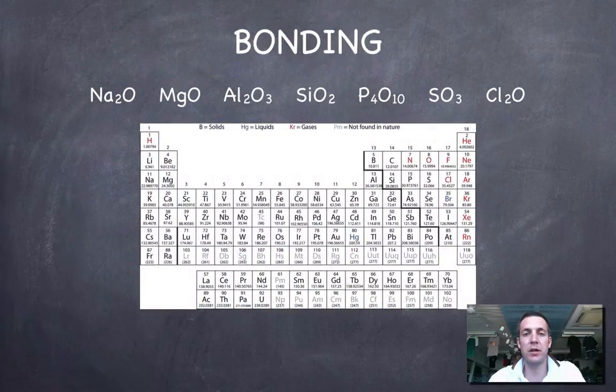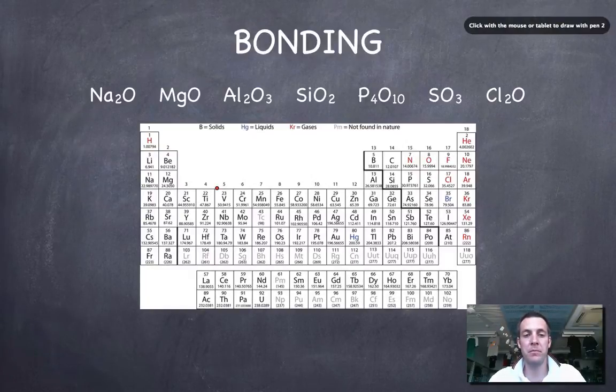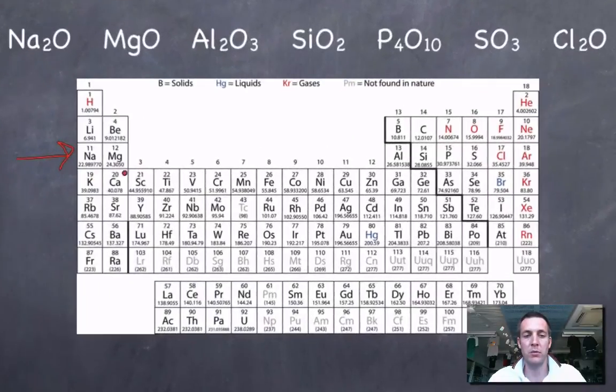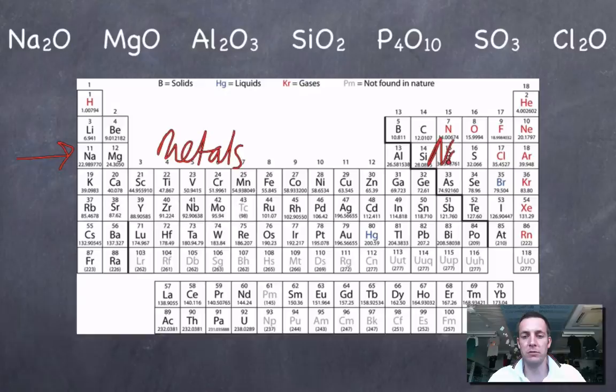Okay, well let's start off by looking at the bonding because this is something we might be able to figure out for ourselves really. We're starting, remember we're looking at the third period here, we're starting with metals on the left hand side. And when we get past aluminium we've got nonmetals.